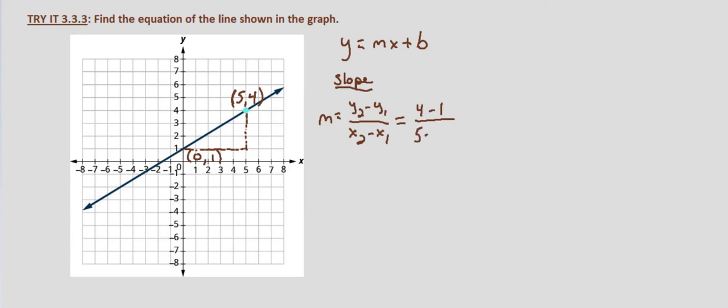over x2 minus x1, which is 5, minus 0. And that equals 3 over 5.